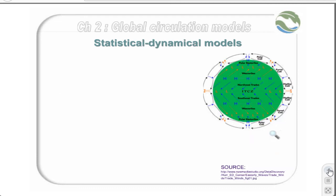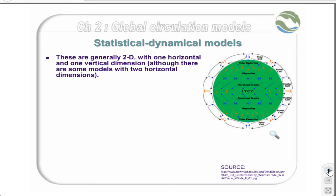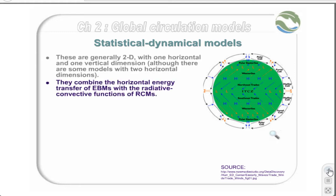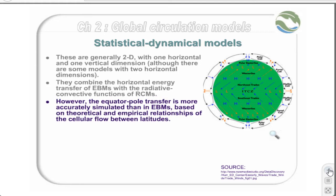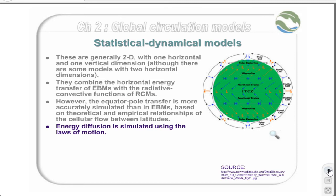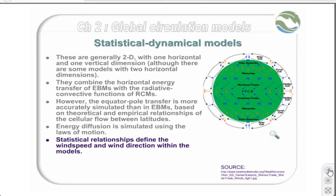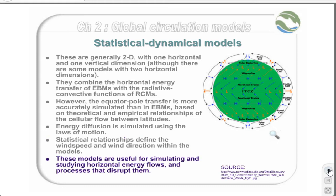Statistical dynamical models are somewhat more complex still. They are generally two-dimensional, with one horizontal and one vertical dimension, although some models work with two horizontal dimensions. These models combine the horizontal energy transfer of EBMs with the radiative convective functions of RC models. However, the equator-to-pole transfer is much more accurately simulated than in EBMs, based primarily on theoretical and empirical relationships of the cellular flow between latitudes. Energy diffusion is simulated using the laws of motion, and statistical relationships define the wind speed and wind direction within the models. These models are useful for simulating and studying horizontal energy flows and processes that disturb them.